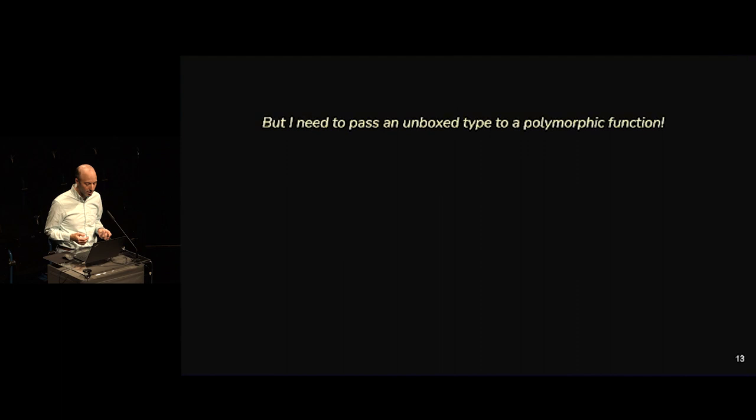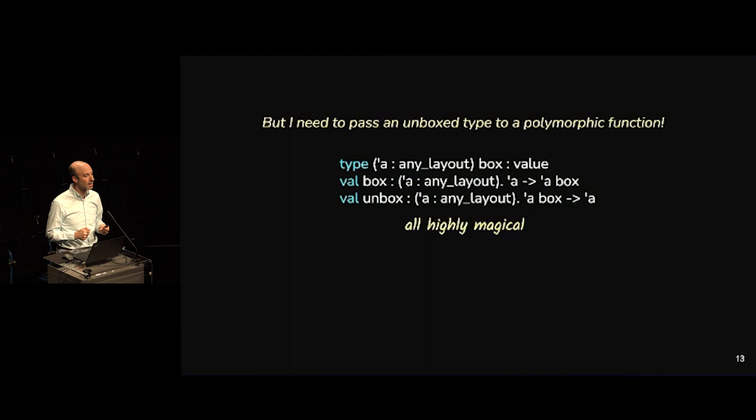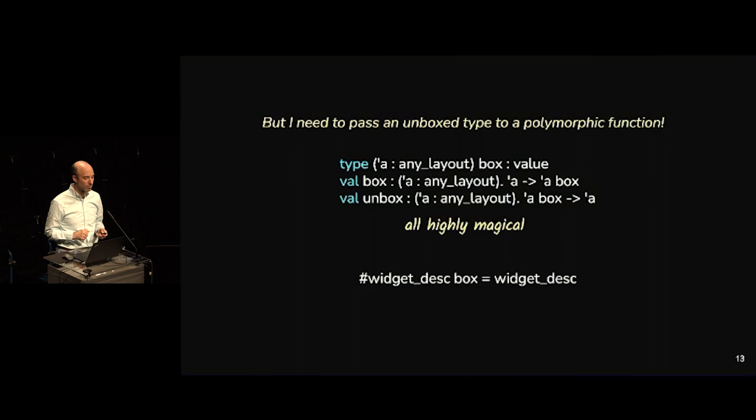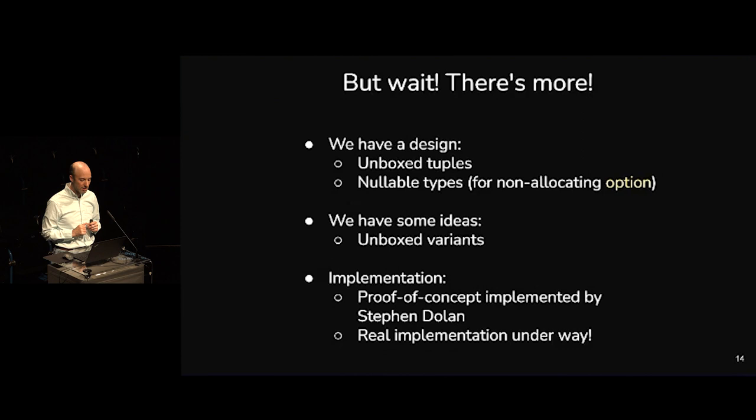If you have an unboxed type and need to pass it to a polymorphic function, we also provide a box type and box and unbox functions that allow going back and forth. These are built-in — better to think of them as families of definitions rather than single definitions — and we get a nice quality relating the box version with the original declaration.